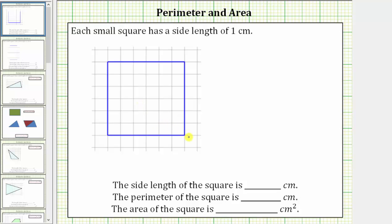We are given a square on grid paper and we're told each small square on the grid paper has a side length of one centimeter. We are first asked to determine the side length of the square, which we can determine using the grid paper, and we know each side of a square has the same length. Looking at this side here, the length is one, two, three, four, five, six centimeters, and therefore all of the sides have a length of six centimeters.